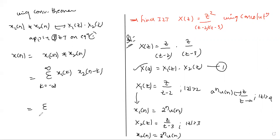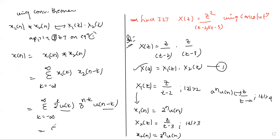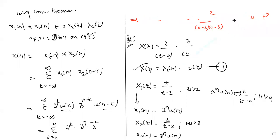So here, the sum from k equal to minus infinity to infinity: X1 of k means 2 to the power k times u of k, and X2 of n minus k means 3 to the power of n minus k times u of n minus k. Multiplying u of k by u of n minus k, the limits become 0 to N for causal signals. This gives 2 to the power k times 3 to the power N times 3 to the power minus k. Now we need to simplify it further.